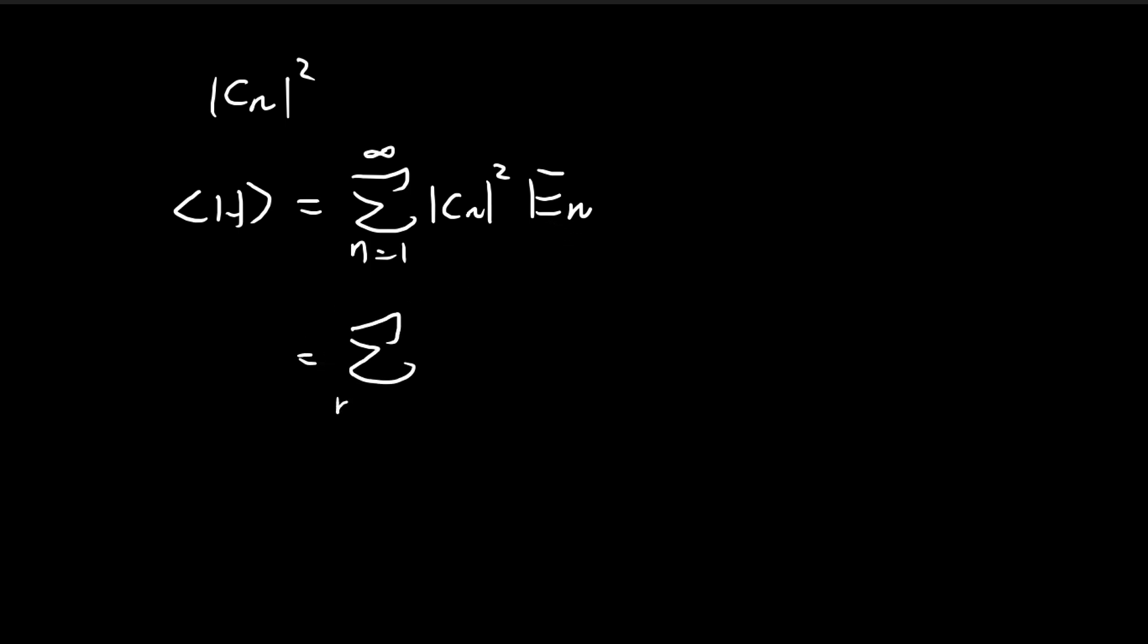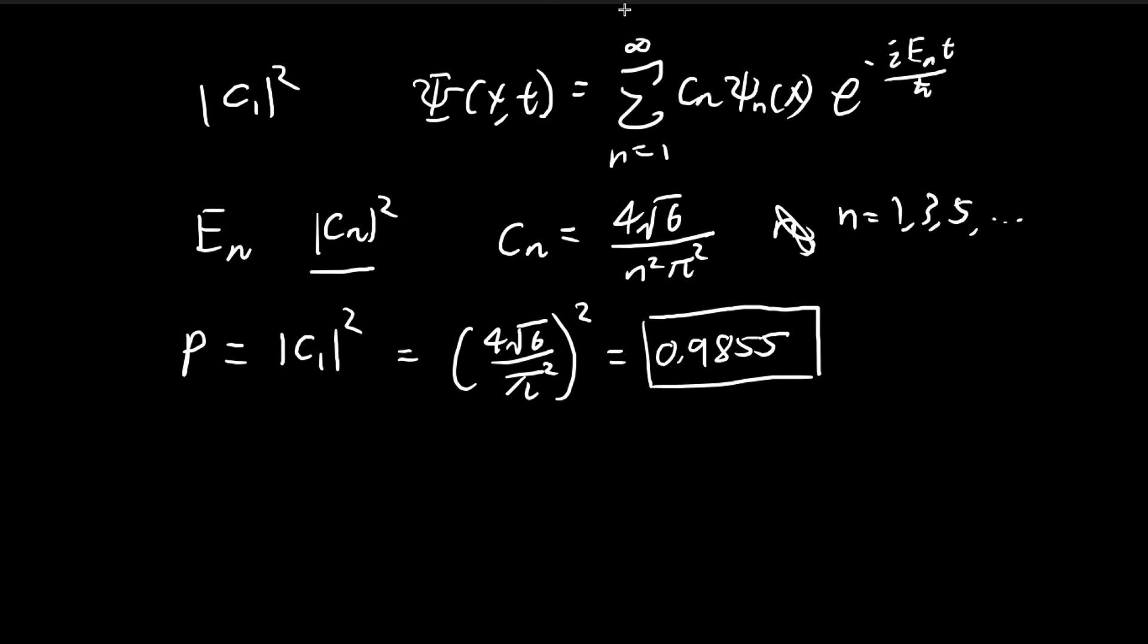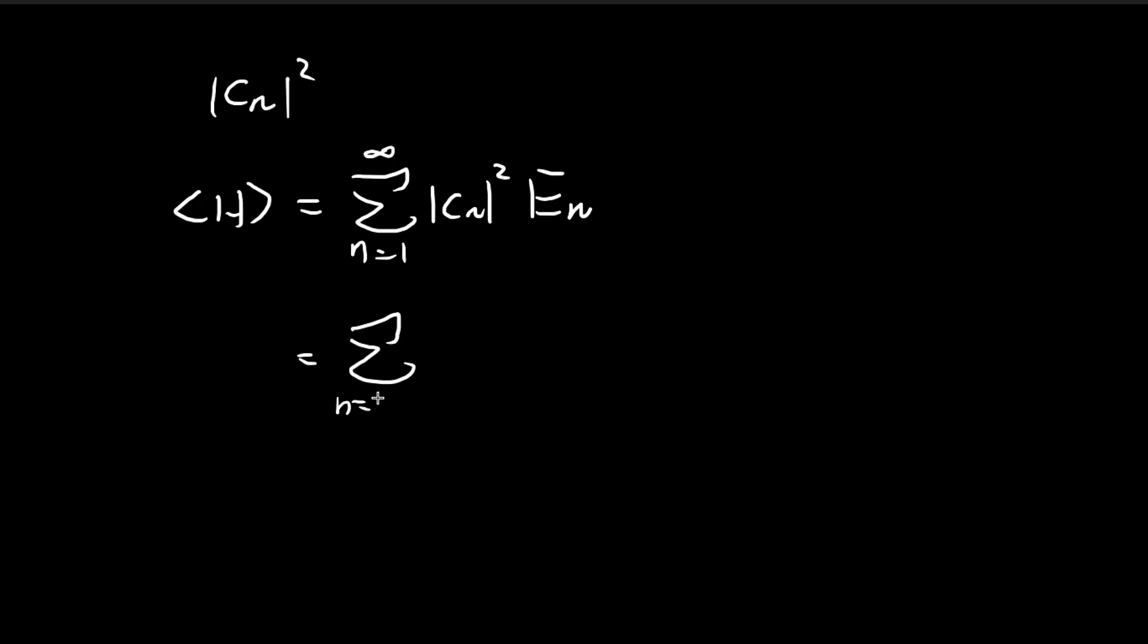So all we have to do now is to substitute our numbers in. Recall that for our constant cn, it only exists for odd numbers. For even numbers, it's just equal to 0. So for the summation, it's only going to go for the odd numbers. So when n is an odd number, we get 4 times the square root of 6 divided by n squared pi squared. And then we square this, and the expression for the energy of the nth stationary state is equal to this expression.